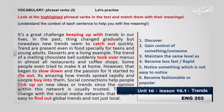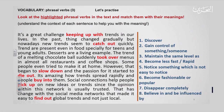Let us read the text together. 'It's a great challenge keeping up with trends in our lives. In the past, things changed gradually, but nowadays new trends seem to catch on quickly. Trends are prevalent especially in food, especially for teens and young adults. The trend of a melting chocolate bowl suddenly took over menus in almost all restaurants and coffee shops. However, that began to slow down and the passion for it started to die out. It's amazing how trends spread rapidly and people buy into them. Social connections help people pick up on new ideas or trends since opinions within these networks are usually trusted. That has changed with social media networks, which make it easy to find out global trends and not just local ones.'